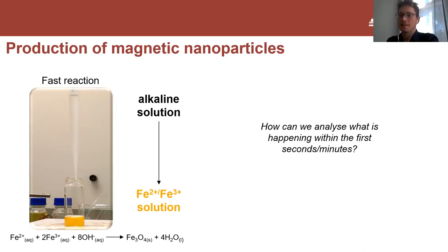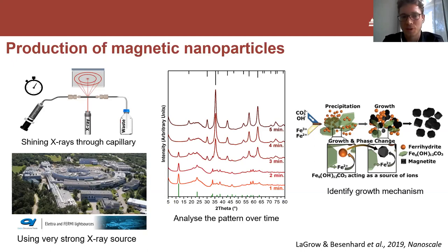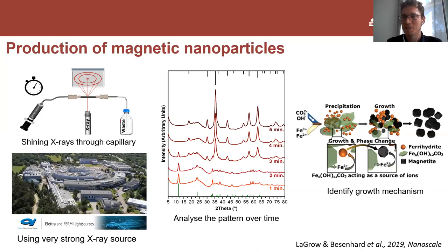What we did was travel to Italy - close to Trieste, they have something called a synchrotron. The synchrotron is a massive particle accelerator which not only accelerates particles but also provides highly intensive x-rays. With such intensive x-rays, you can analyze the crystal structure not within hours but within seconds or minutes. We found that the magnetic particles we want are formed after four to five minutes, and that in the first minute some kind of intermediate phase forms which then transforms into the magnetic particles. We were able to provide a particle formation mechanism for these magnetic particles - very exciting research.